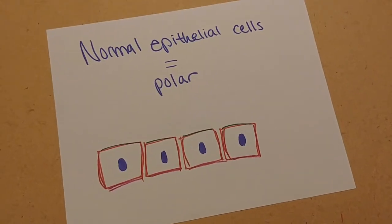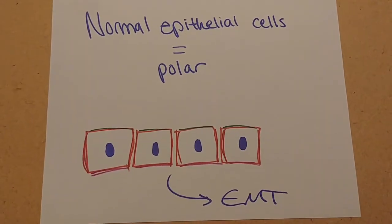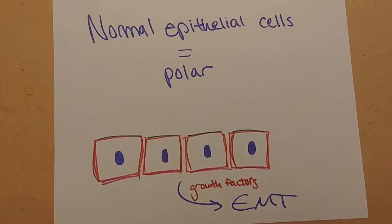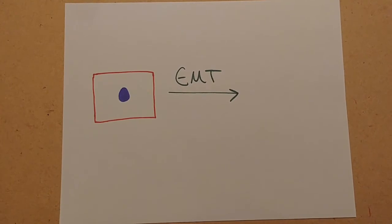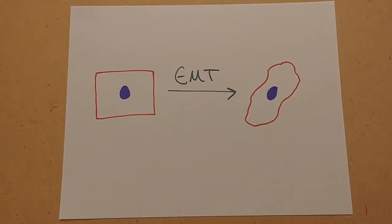Normal epithelial cells are said to be polar, meaning they have strict membrane domains, but due to oncogenic pathways mediated by growth factors, undergo EMT. When a cell undergoes EMT, it becomes more elongated, a morphology more conducive to movement and metastasis.